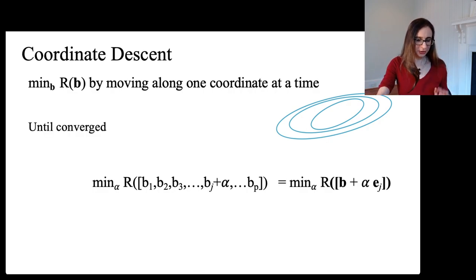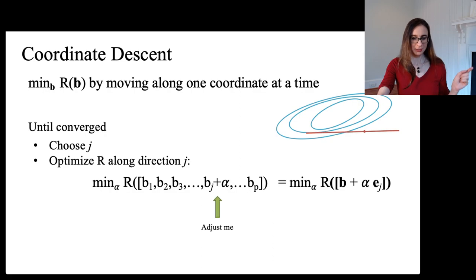Until you're converged, you choose a direction to move in, which happens to be this direction, like horizontal to the left. And I'm going to move in that direction. I'm going to update my value of b by moving in that direction until I hit the minimum of the function in that direction. And that value is called alpha. That's my step size.